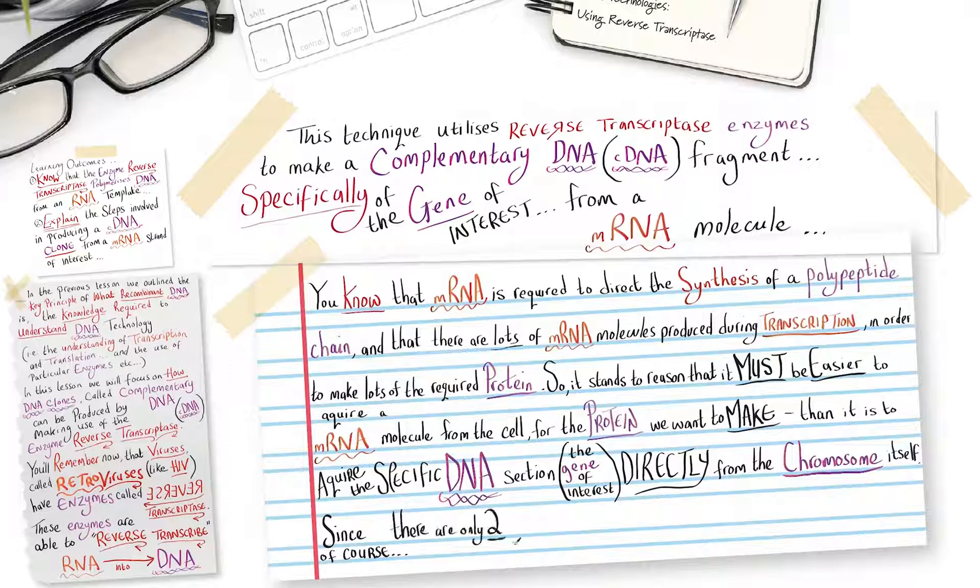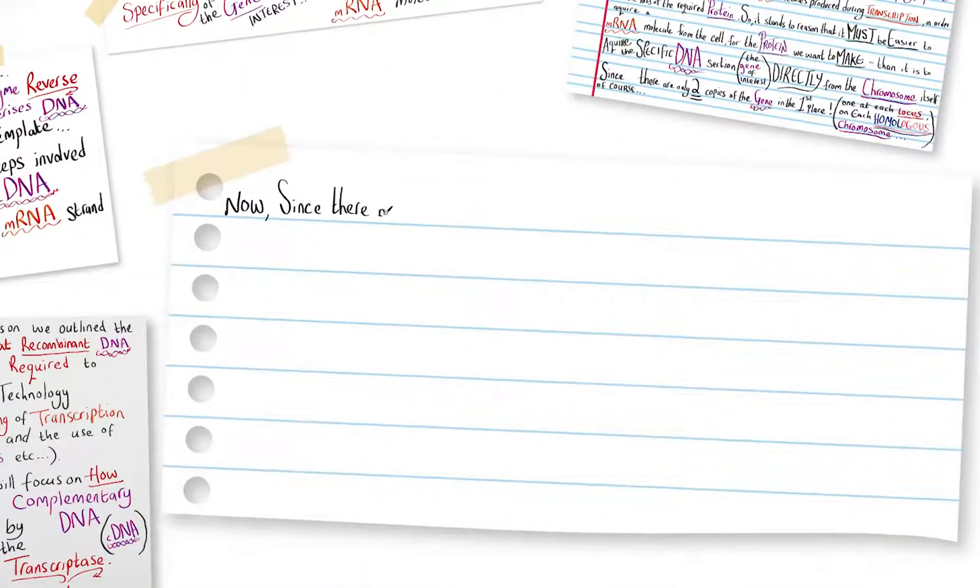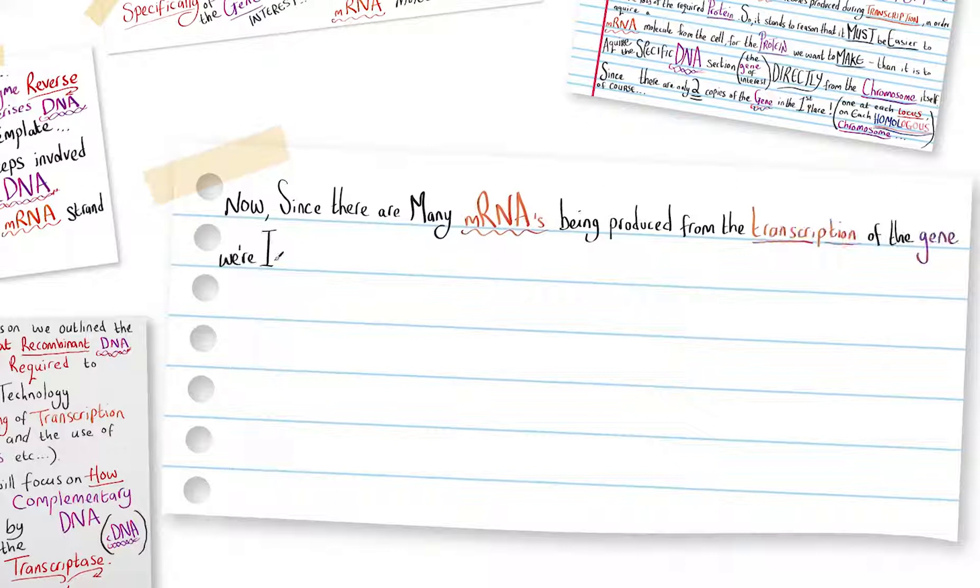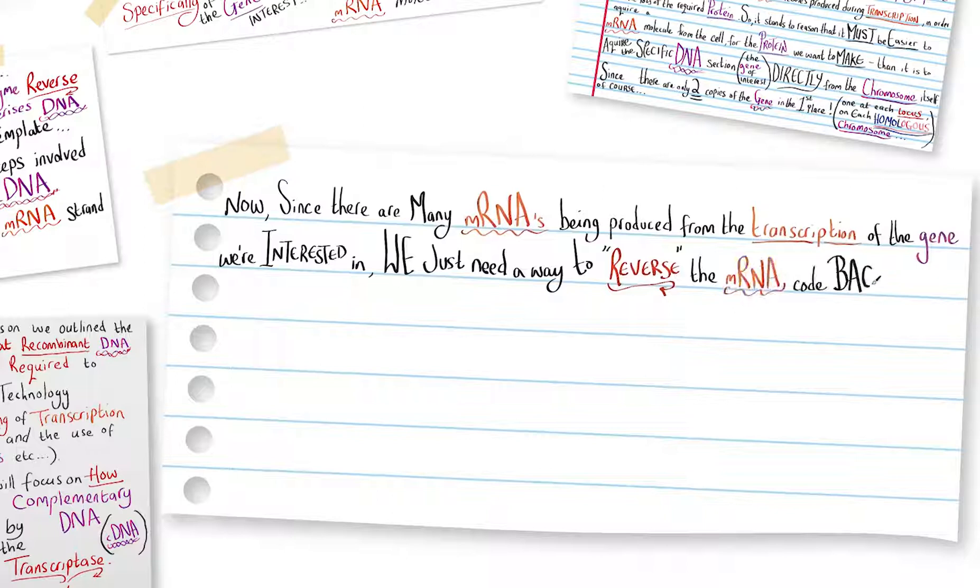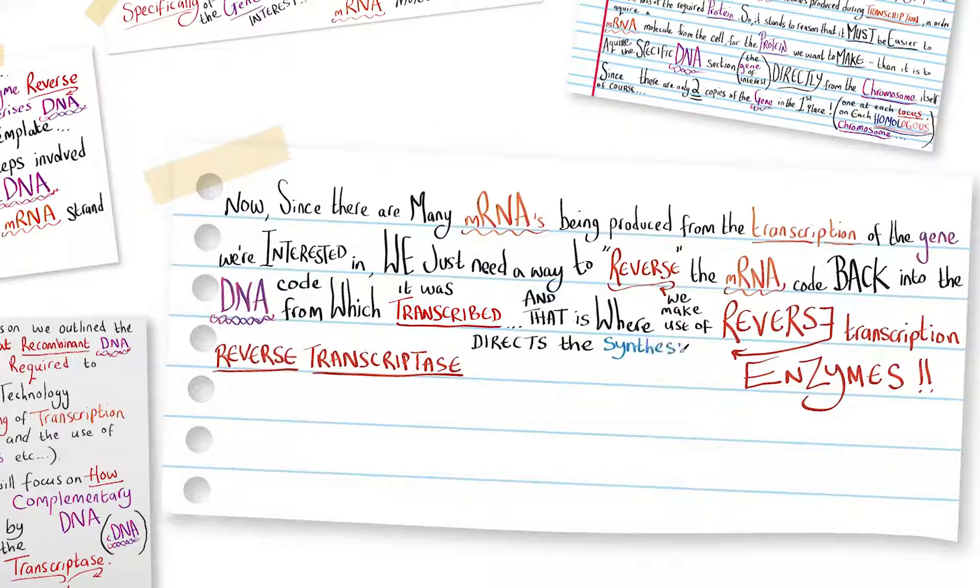Since there are only two copies of the gene in the first place, one at each locus on each homologous chromosome. Now, since there are many messenger RNAs being produced from the transcription of the gene we're interested in, we just need a way to reverse the messenger RNA code back into the DNA code from which it was transcribed. That is where we make use of reverse transcription enzymes. Reverse transcriptase directs the synthesis of a DNA strand from an RNA template.